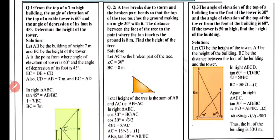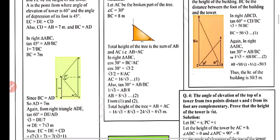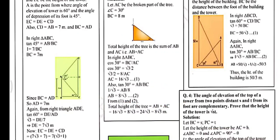From equations 1 and 2, total height of tree = AB + AC = 8/√3 + 16/√3 = 24/√3 = 8√3 meters. So the total height of the tree — both the broken and standing parts combined — is 8√3 meters.